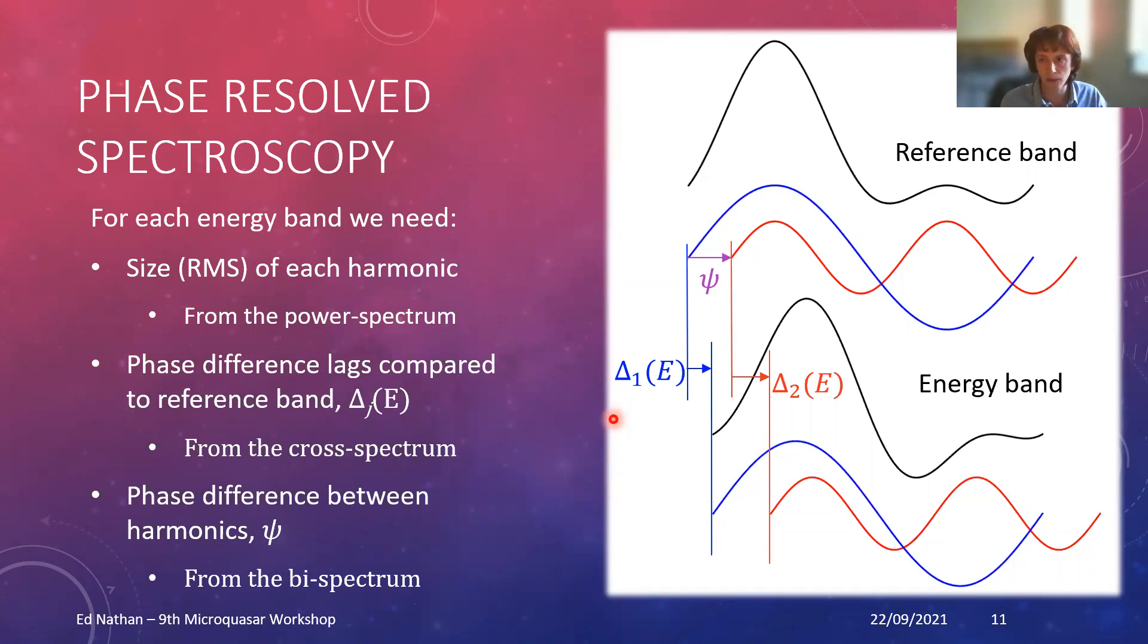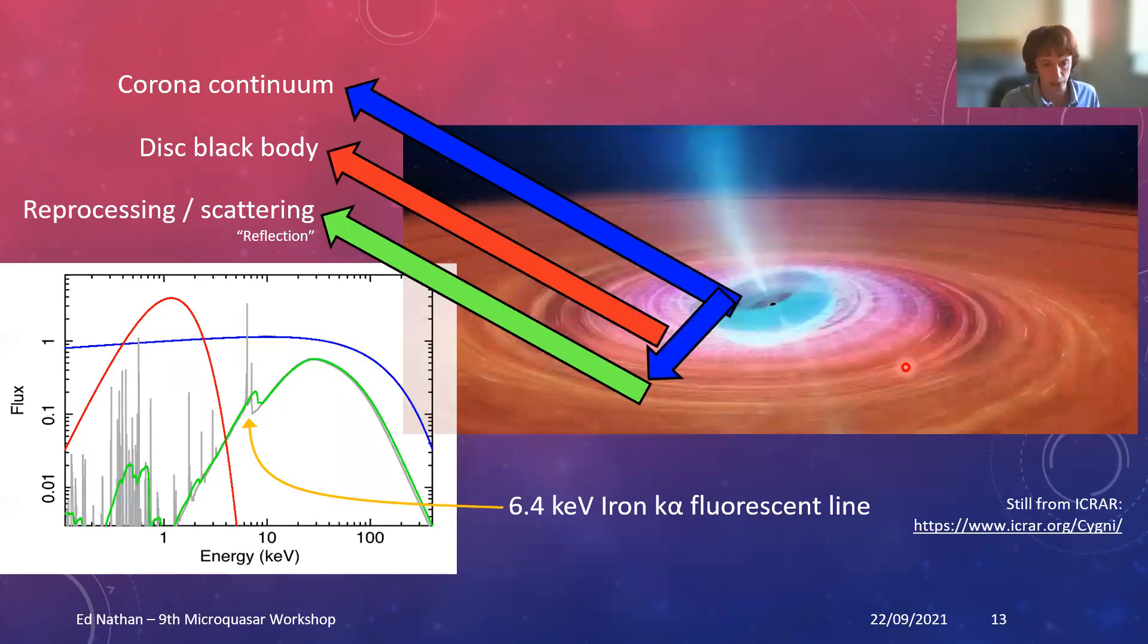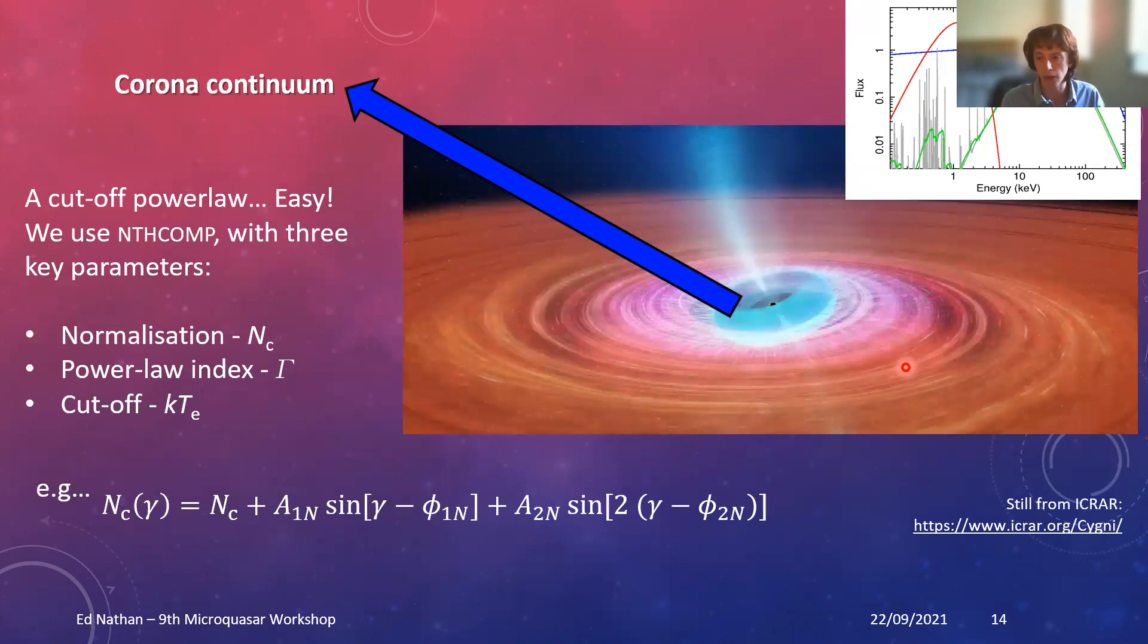We use that with the cross spectrum, which we heard a bit about yesterday and just now from Abby. We've also got the final piece of information we want, which is the phase difference between the two harmonics in the reference band. We can actually use the bispectrum, which I believe we're going to hear later from Kavita, who actually gave me this idea. With those three pieces of information, we can reconstruct the waveform in each energy band and do that in the Fourier domain.